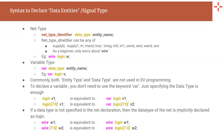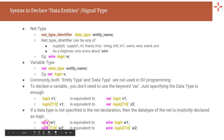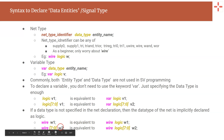But if you want to specify them as net type, you have to specifically use any of the net type identifiers such as supply0, supply1, tri, triand, trior, wire, etc. And to add a bit more detail: if you use a net type keyword to declare an entity, you don't necessarily need to write the data type explicitly — by default, the data type in a net type declaration will always be logic. That means writing wire w1 is equivalent to wire logic w1, and wire [7:0] w2 is equivalent to wire logic [7:0] w2.